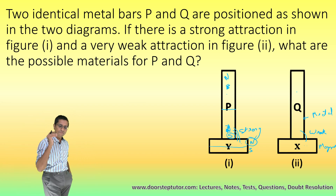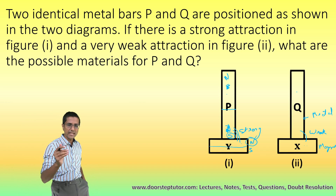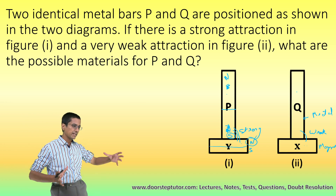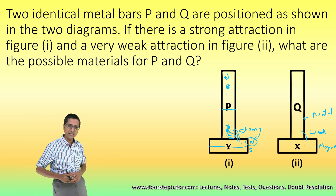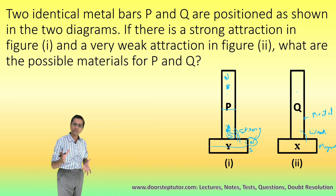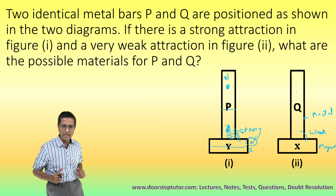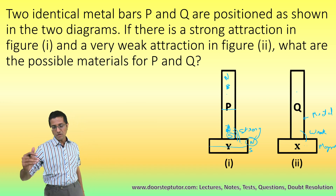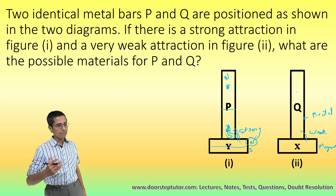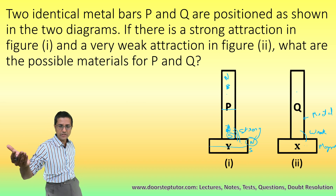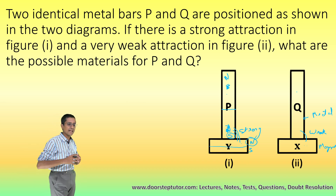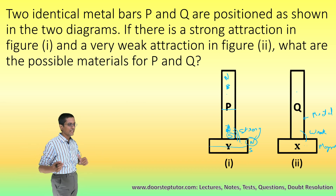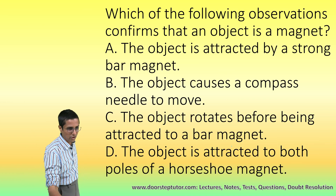So in the first case, P has to be a magnet and Y also has to be a magnet, with north and south poles facing each other, for there to be strong attraction. In the second case, X is a magnet and Q is a metal, which gives us one weak and one strong attraction.